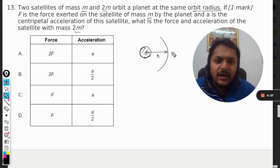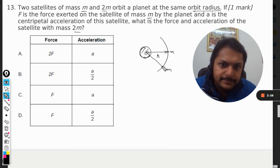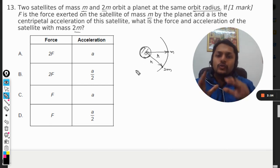Let us say this is the planet. This radius is taken as r and here is the planet of mass m. Now there is another planet in the same orbit and this is 2m, and it is also moving in the same orbit.